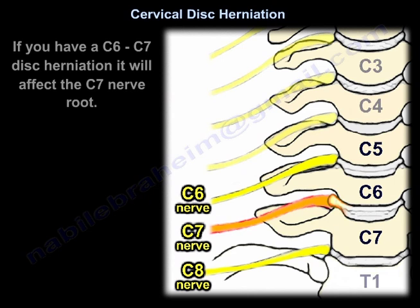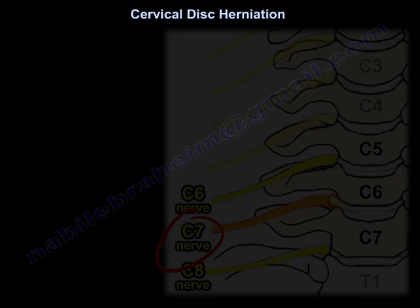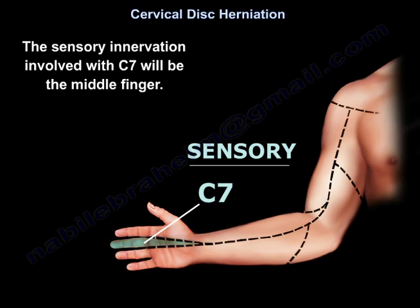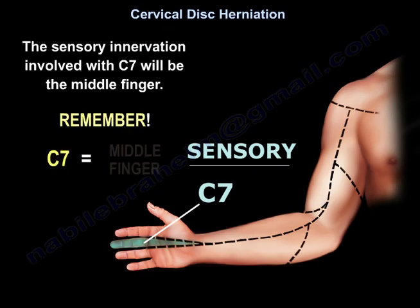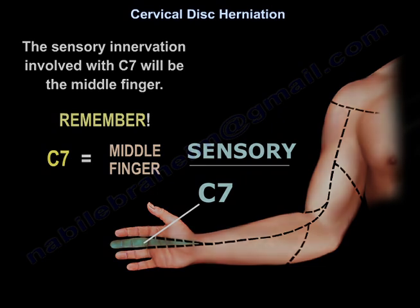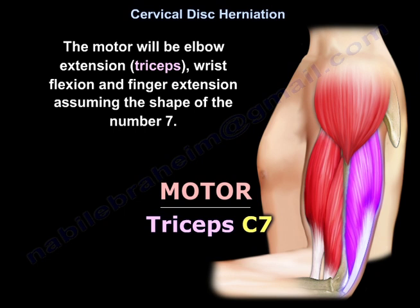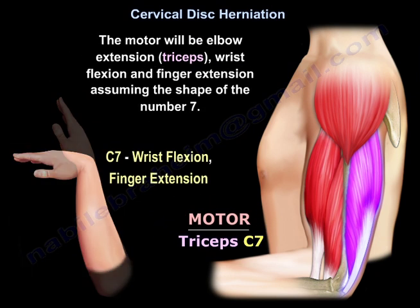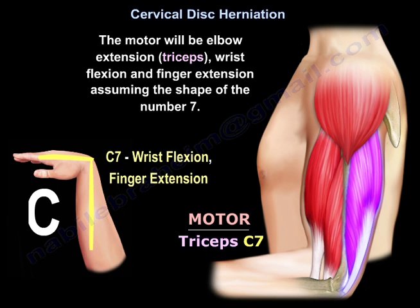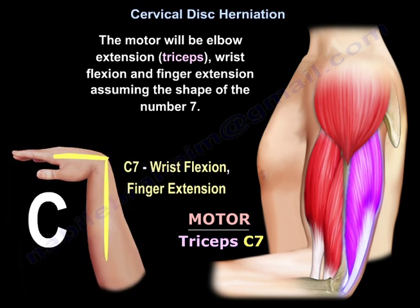If you have a C6-C7 disc herniation, it will affect the C7 nerve root. The sensory distribution of C7 is the middle finger, and the motor function includes elbow extension, the triceps, wrist flexion, and finger extension — assuming the shape of the number seven.